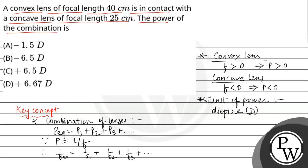Now, with the help of this key concept, we will proceed with the question. The question says that there is a convex lens. Here we have a convex lens and it is in contact with a concave lens. These two are in contact.